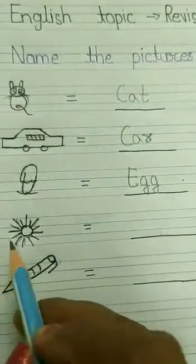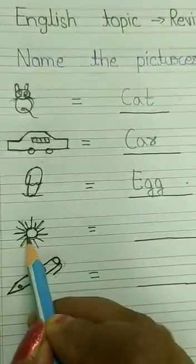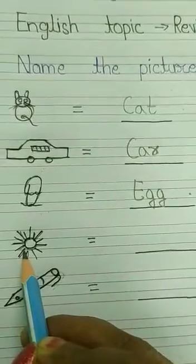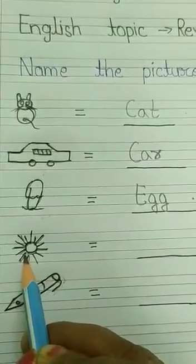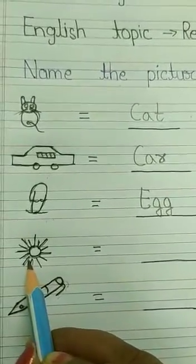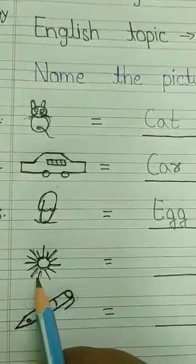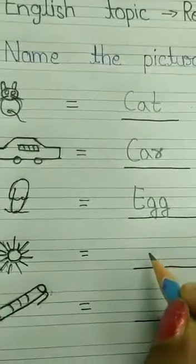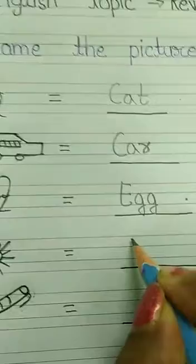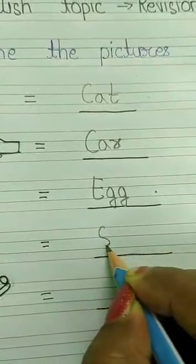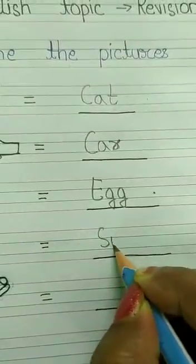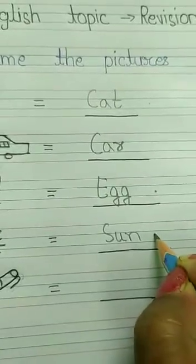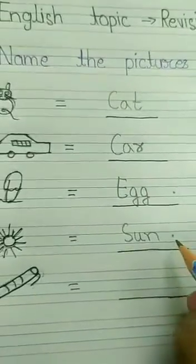Next picture क्या है? Sun बना हुआ है ना. Sun की spelling क्या होगी? S-U-N, sun. Sun means सूरज. समझ में आ रहा है? Picture क्या चीज़ का है? सूरज का, यानि sun का. तो हम यहाँ पर लिखेंगे S-U-N, sun. Sun means सूरज.